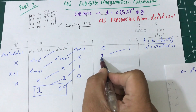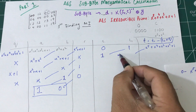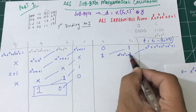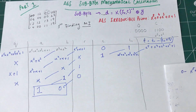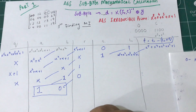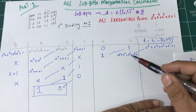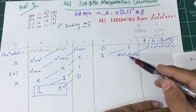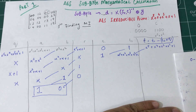I'm going to bring this 1 here and rewrite this: x^5 plus x^4 plus x^3 plus x^2 plus 1. Now let's calculate what is x^5 plus x^4 plus x^3 plus x^2 plus 1 multiplied by q.